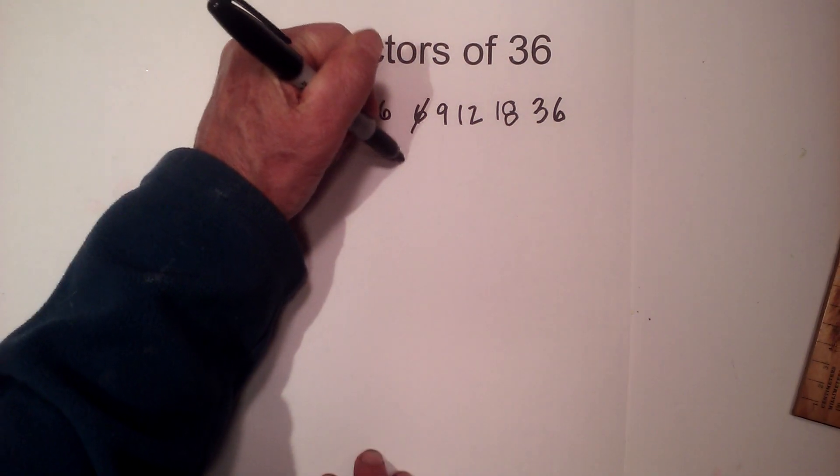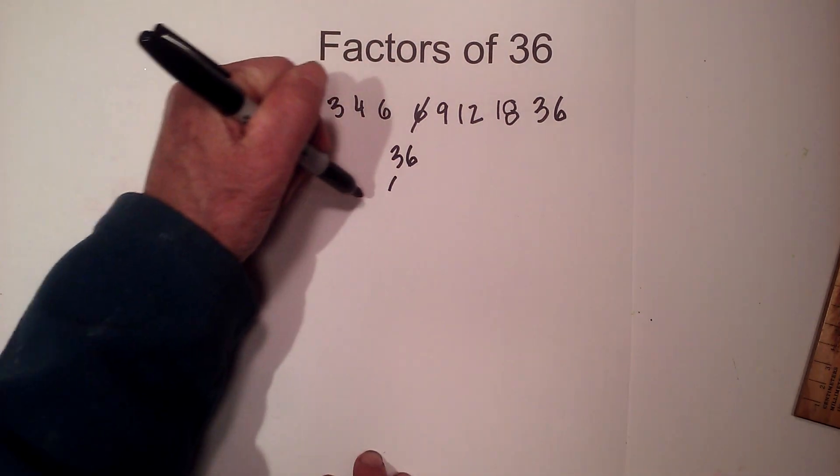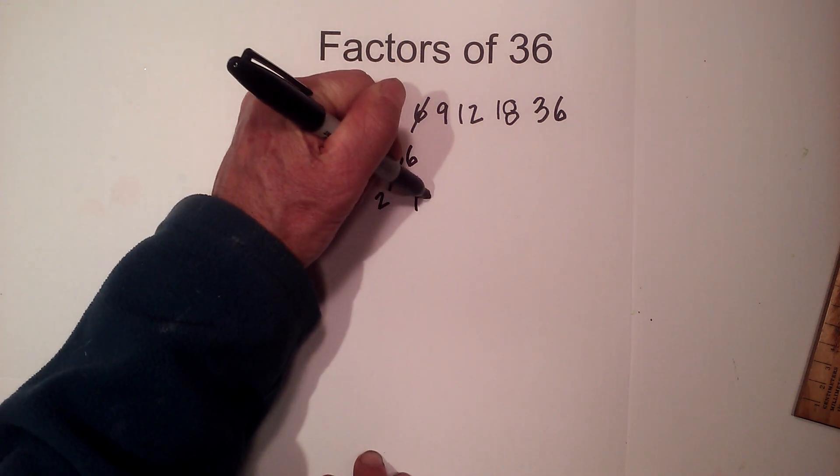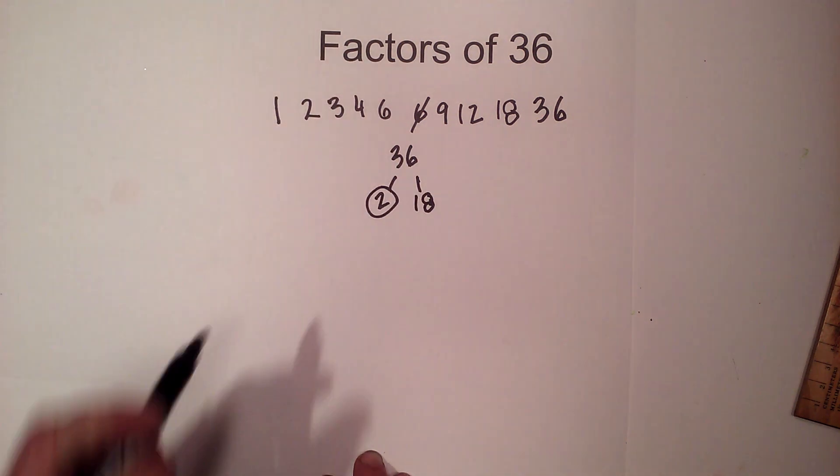Now let's find the prime numbers of 36 so let's start with 2 times 18 is 36 and I like to complete a factor tree.